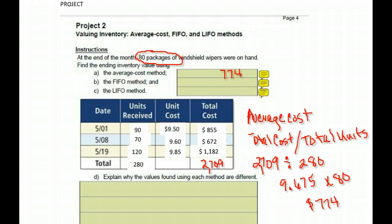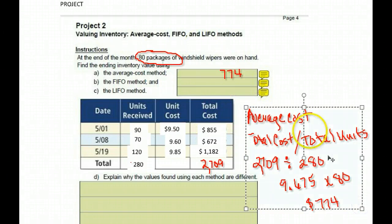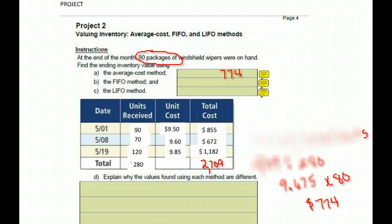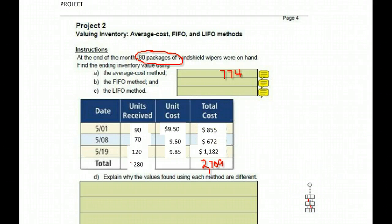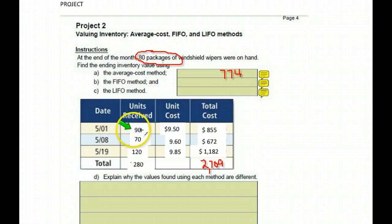I'm going to clear this out so we can do the other two methods — so if you need to write that down, make sure you pause. Next we're doing the FIFO method — that means first in, first out — so it means we start by selling the first items we received.